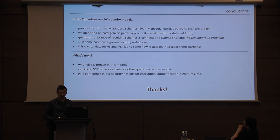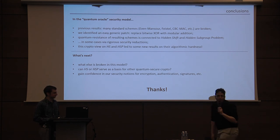As far as what's next, I think, obviously, we should try hard to break more things in this model. I think it would be nice to think about whether hidden shift or hidden subgroup can serve as a basis for other quantum secure cryptography, maybe even public key constructions. And in general, I think there's some nice work to be done in understanding exactly what the right security notions should be for encryption and authentication and signatures in this Quantum Oracle model. There's been some work on this already, but I think there's still quite a bit to do. Thanks. Any questions?